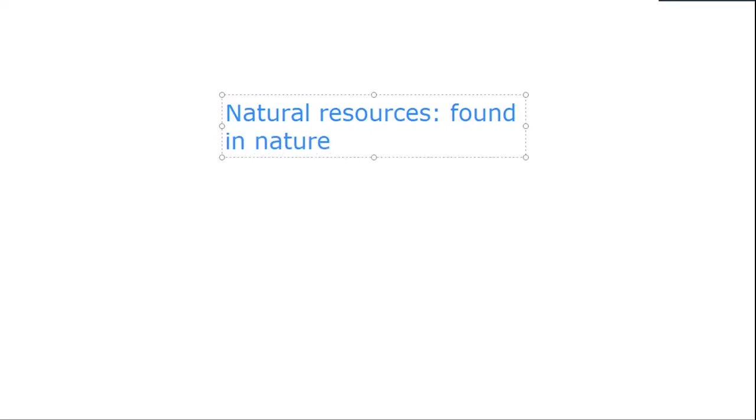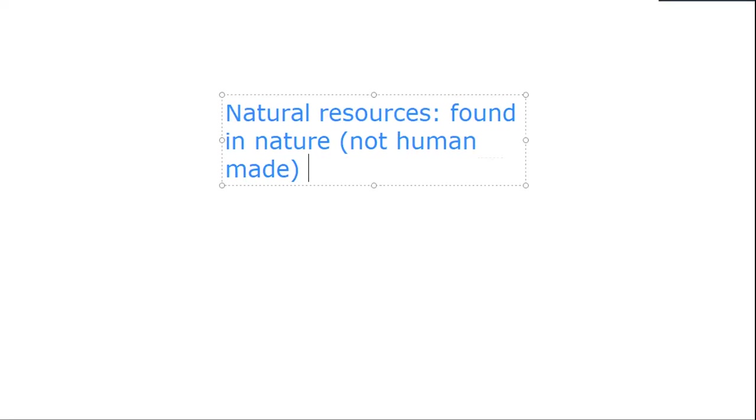Before talking about renewable or non-renewable energy resources, let's cover topic five: natural resources. What are natural resources? They are things or resources found in nature — they are not human made. Natural resources are materials found in nature that are not human made, and we use them.